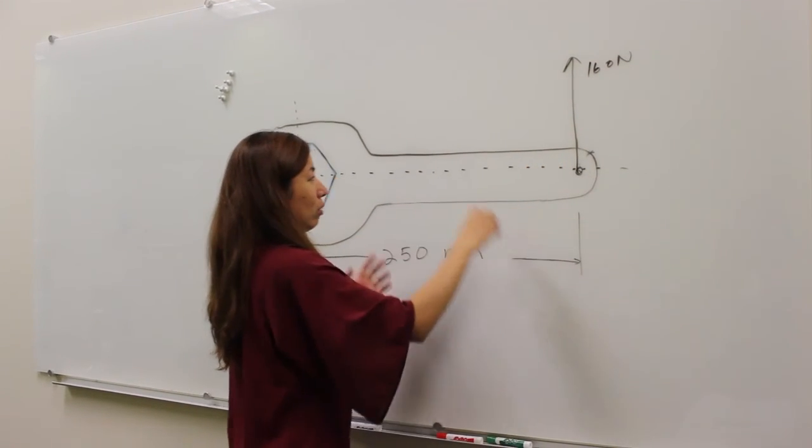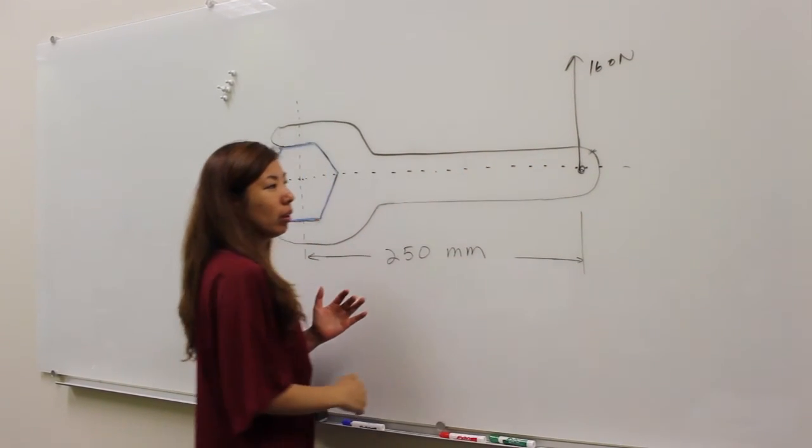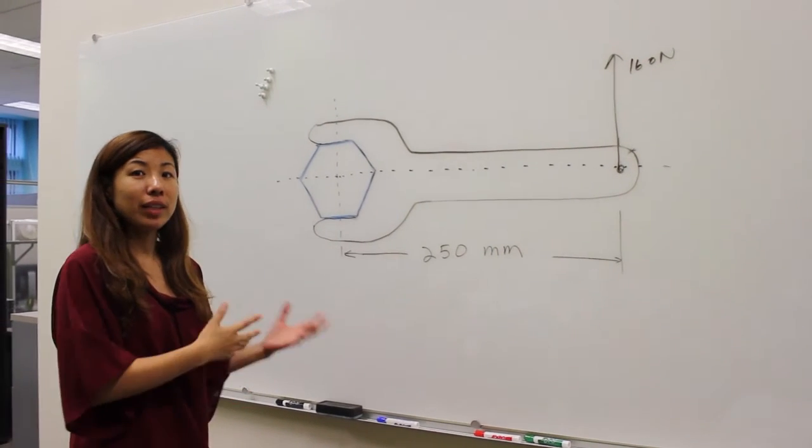In the other case, when the force is going down, the wrench is moving clockwise, which means it's a negative moment.